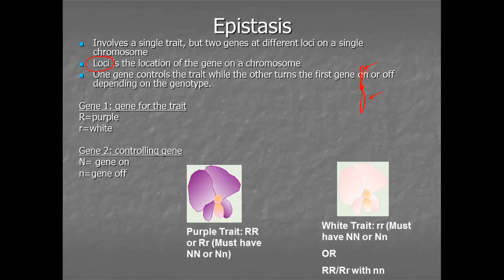Let's look at this example. This is a trait for color — we have one trait: what color is the flower going to be? But we have two genes that will control that. The gene says that the color of the plant will be either purple or white. So this is just complete dominance — purple plant, purple plant, white plant.